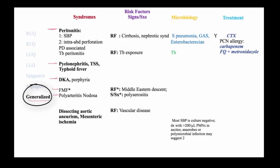Finally, vascular causes of abdominal pain such as dissecting aortic aneurysm or mesenteric ischemia should be considered. In the case of peritonitis, we break that down as primary — so-called spontaneous bacterial peritonitis — which occurs in individuals with cirrhosis or nephrotic syndrome.